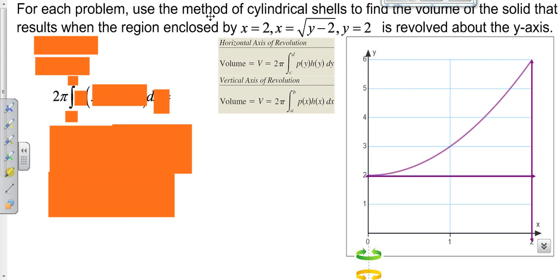We're going to find the volume using shells of a solid revolved around the y-axis that's enclosed by x equals 2, which is our vertical line over here, y equals 2, which is our horizontal line here, and our parabola x equals the square root of y minus 2, which is our curve right here.